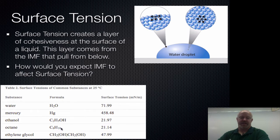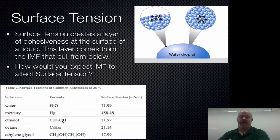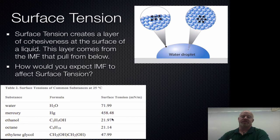Going to octane — C8H18 — it's an even bigger molecule, and it can only generate about the same surface tension as ethanol. The reason being octane only has dispersion forces because it's nonpolar. Ethanol has an oxygen-to-hydrogen bond, so it actually has some hydrogen bonding. That gives it a little bit higher surface tension. So even though ethanol is much smaller than octane, it can generate the same surface tension because of its hydrogen bonding.